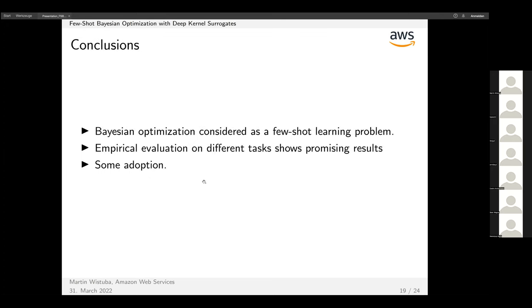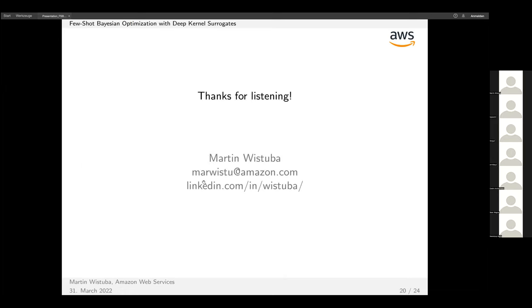I can conclude now. I tried to show you what we did and that few-shot learning could be an interesting angle for Bayesian optimization and maybe a different perspective. I shared some of our experimental results that indicated it seems to do well, and I tried to give you some pointers to some early adoption of this idea. Thanks a lot. Do you have any questions?